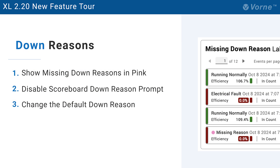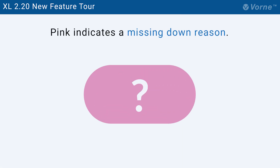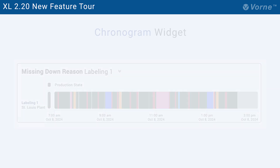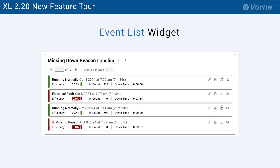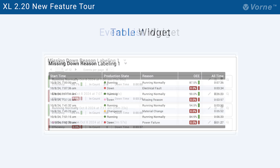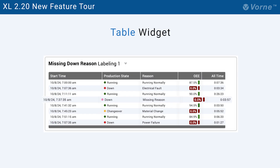Let's kick off our 220 tour with three features related to down reasons. We've added a new color to our palette with the introduction of pink to indicate a missing down reason. You can see it in the chronogram, in the event list, and in tables.